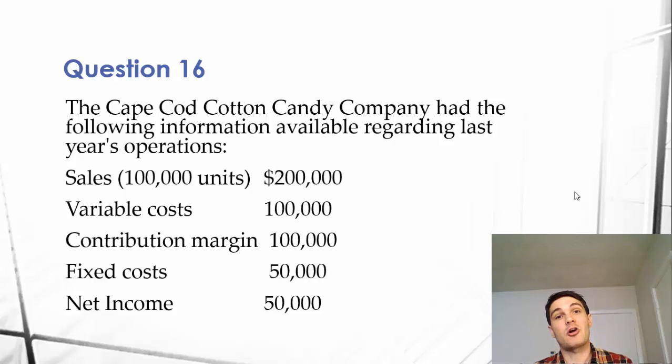our final question in our managerial accounting series. So, let's read the question. The Cape Cod Cotton Candy Company, oof, what a tongue twister, had the following information available regarding last year's operations.